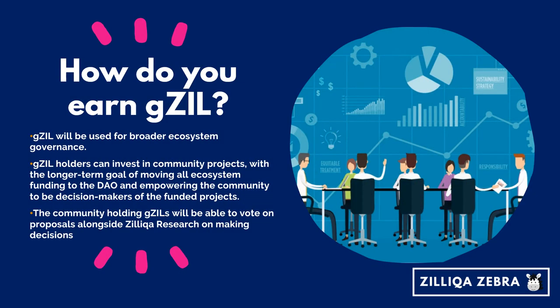GZILs will be used for broader ecosystem governance. This will help create a DAO-like structure through which GZIL holders can invest in community projects, with the longer-term goal of moving all ecosystem funding to the DAO and empowering the community to be the decision-makers of the funded projects. The community holding GZILs will then be able to vote on proposals, alongside Zilliqa research, on making decisions.